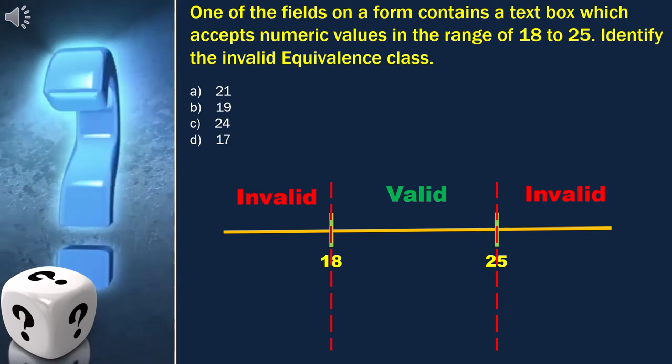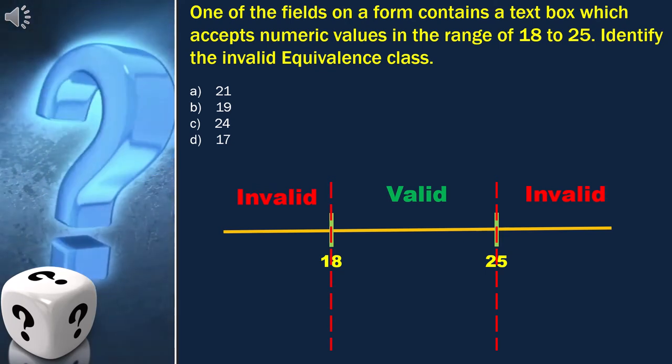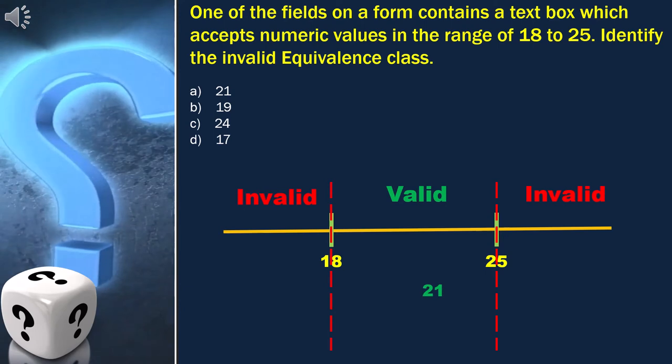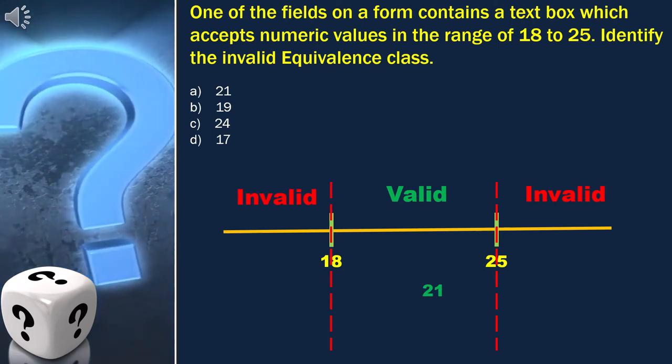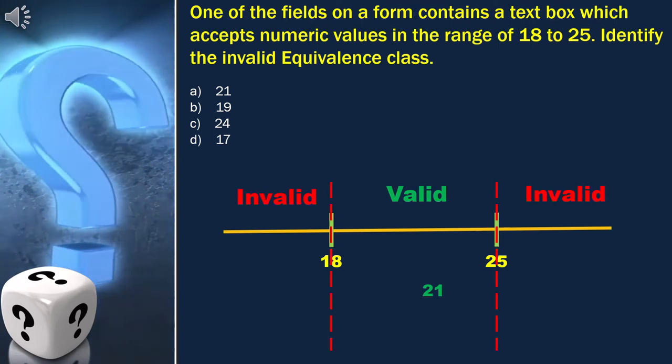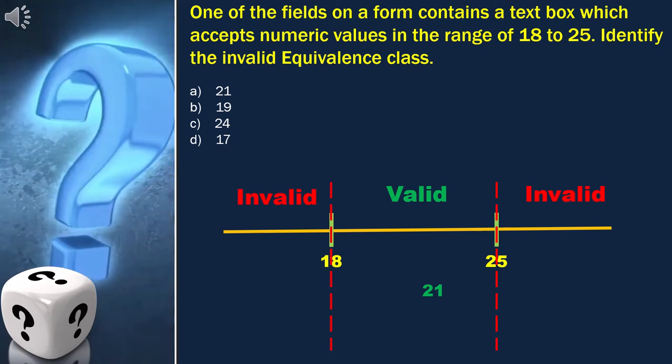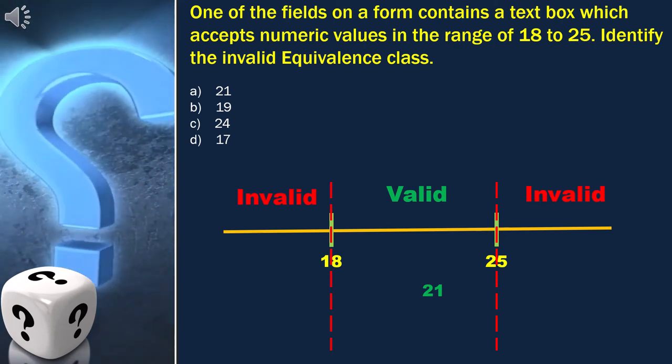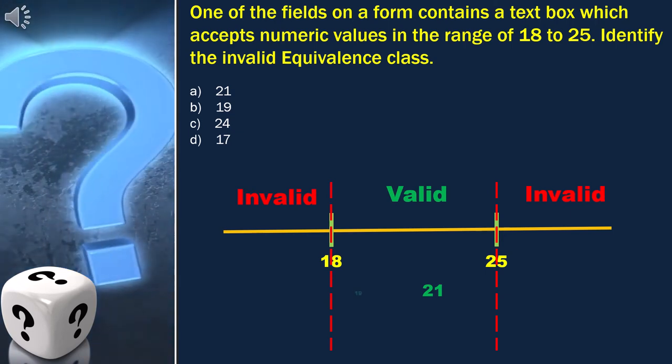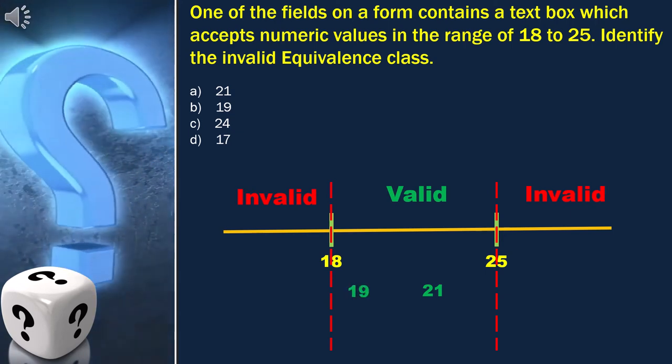Now let's look into the options. The first option is 21, and we can place 21 here which is a valid value. The next option is 19, and we can place it here which is also a valid value.